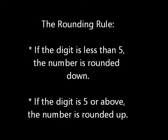Rounding needs to be used when children are working out approximations. The rounding rules are as follows: If the digit is less than 5, the number is rounded down. If the digit is 5 or above, the number is rounded up.